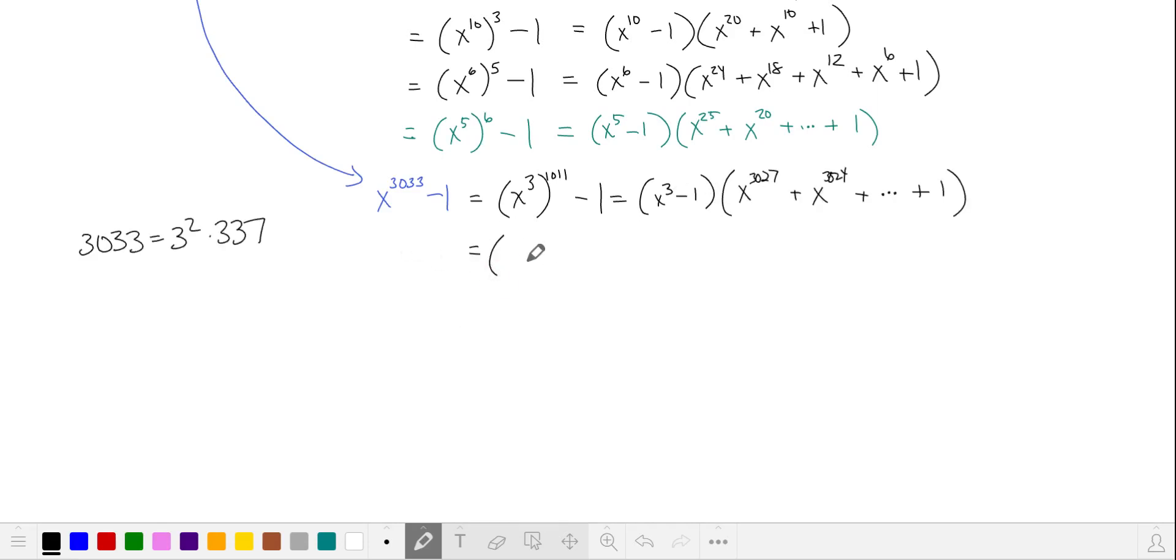3033 can also be written as 9 times 337. So we can factor out x to the 9th minus 1. We can also write this as the difference of 9th powers.